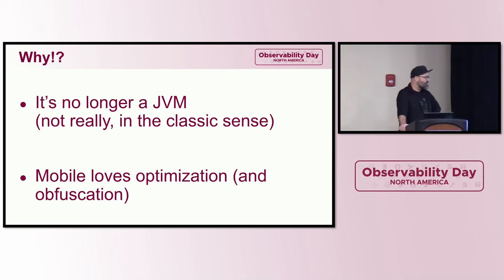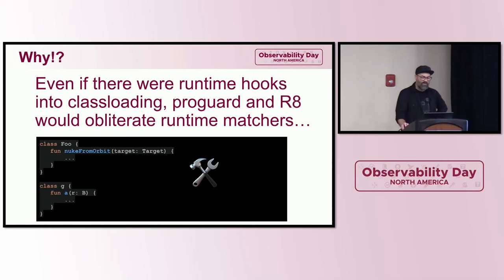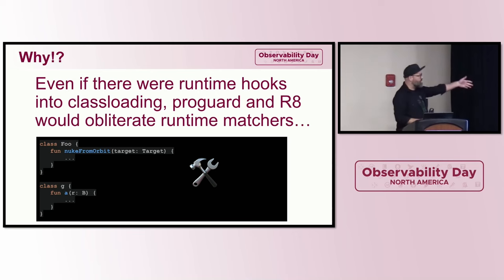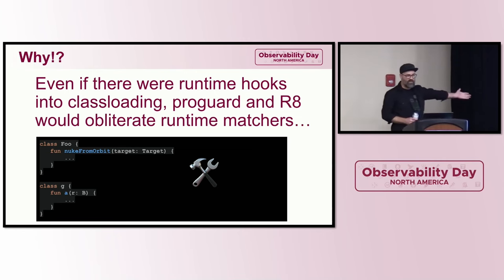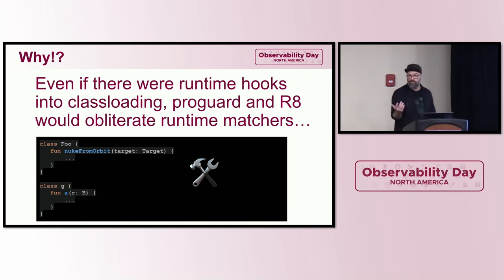In the mobile world, we love optimization and obfuscation. You optimize the hell out of your code to make apps run faster, then obfuscate it so people can't easily reverse-engineer your application. Even if the Android platform provided runtime hooks for bytecode loading, obfuscation makes that hard. You get a class called Foo with a method called nukeFromOrbit — after obfuscation it becomes class G with method A and argument R. It's really hard to craft advice targeting a method whose name changes between builds.